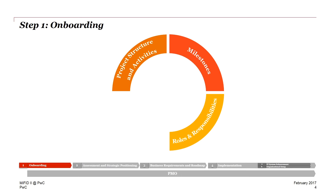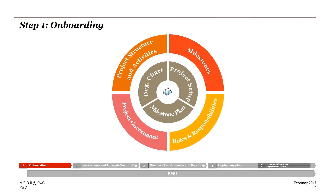Furthermore, it is helpful to define roles and responsibilities for the project. Normally we have a project leader, a team structure, sub-project organizations, the whole team, and also escalation positions such as a project steering committee that communicates and reports to the management board. Finally, project governance should be promoted because it is of high importance, and there is a need to have an escalation charter in case of any struggles within the project. The deliverables for this phase will be an overall project organization chart, the project setup, and the milestone plan.